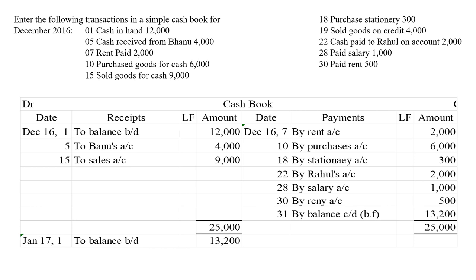So I have written the template here: date column, receipts, LF, amount, date, payments, LF, amount. The first transaction is cash in hand — this means opening balance. We are opening the account with 12,000 rupees. Cash is an asset, and for all assets, the opening balance will be recorded in the debit side.